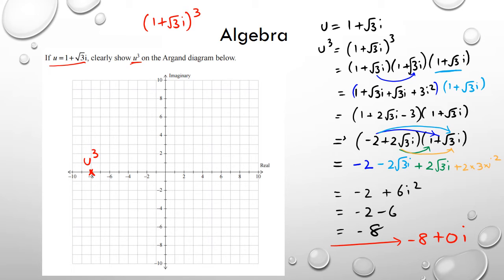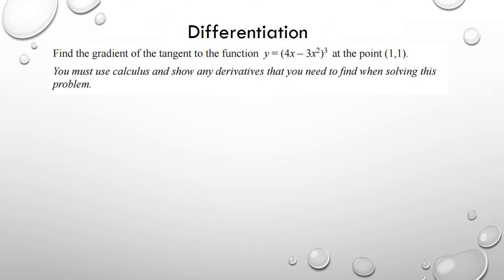Alright, question two. With this question, what it's asking us is to find the gradient of the tangent to this function here at the point (1,1). So first off, we're actually looking for the gradient. It's just asking for the gradient, so we've got f(x).